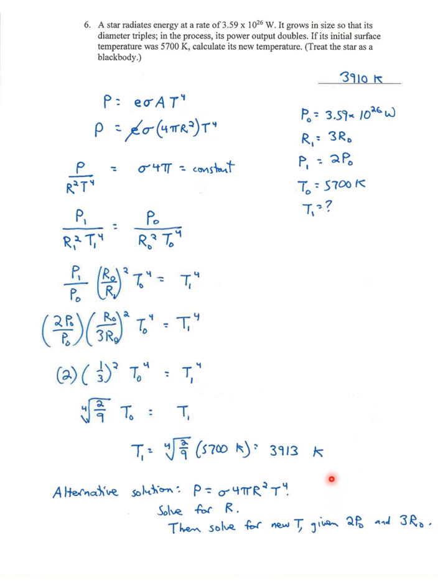Another solution, another way you could solve this, is just recognizing P = σ4πR²T⁴. You could just solve for the radius because you know all the other values. Solve for the radius, then triple the radius, double the power output, and solve for the new T given the original formula. That's another way you could do this.